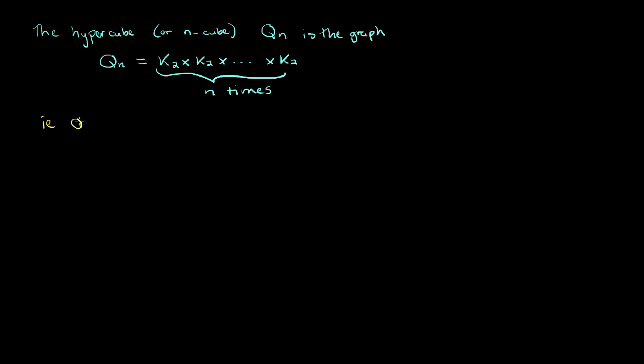So in other words, Q1 is just K2, and Qn is equal to Q(n-1) Cartesian product with K2. To get a feeling for this, let's take a look at a couple of small examples. So obviously Q1 is easy, that's just K2.